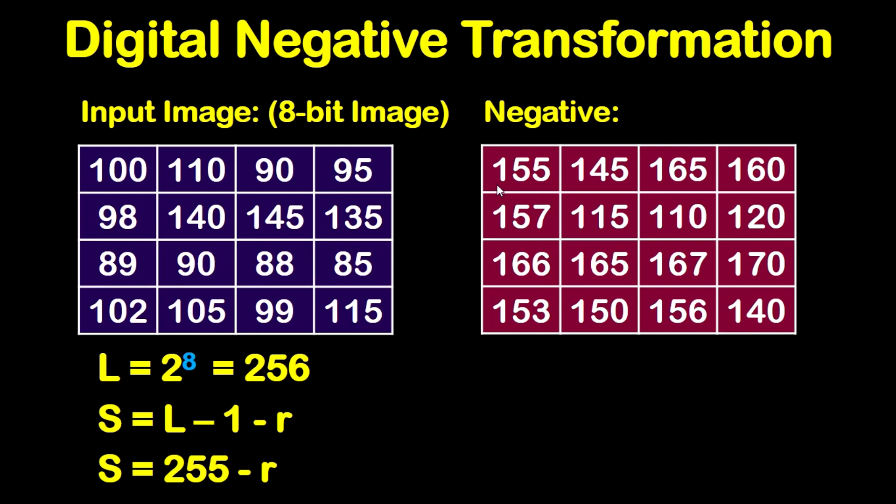So for the first pixel in the negative result, we are going to say 255 minus the original pixel in the input image which is 100. 255 minus 100, this will give you 155.